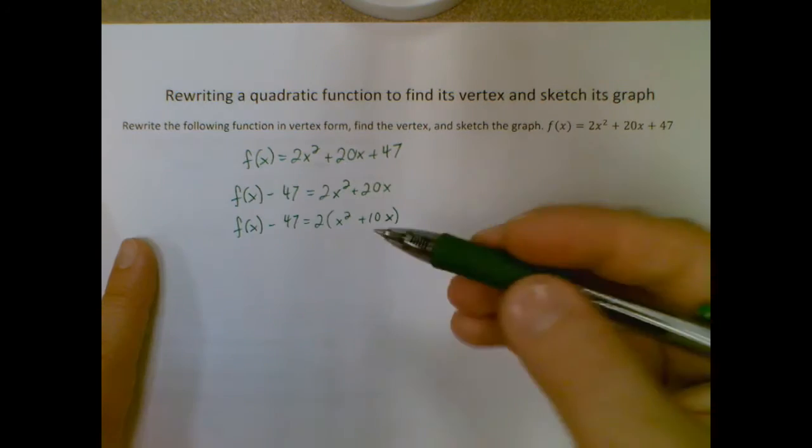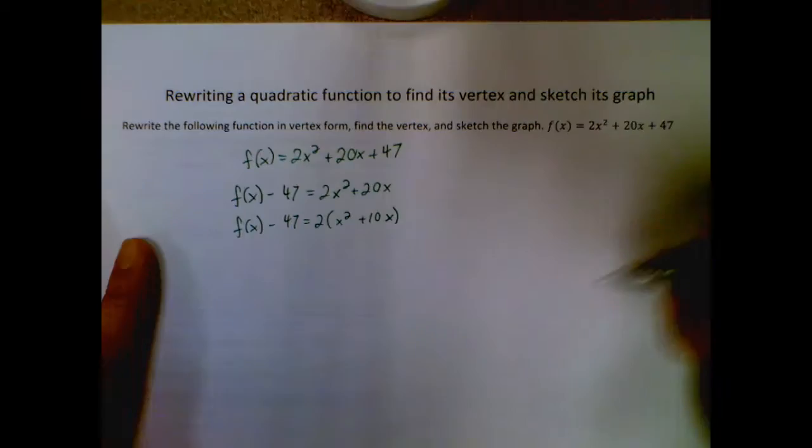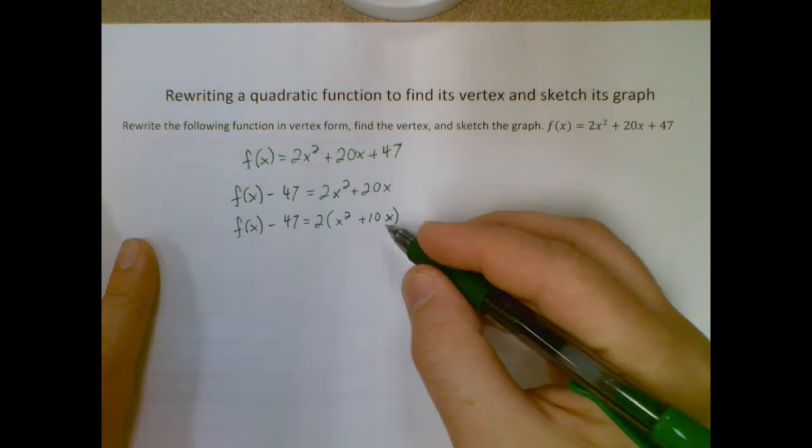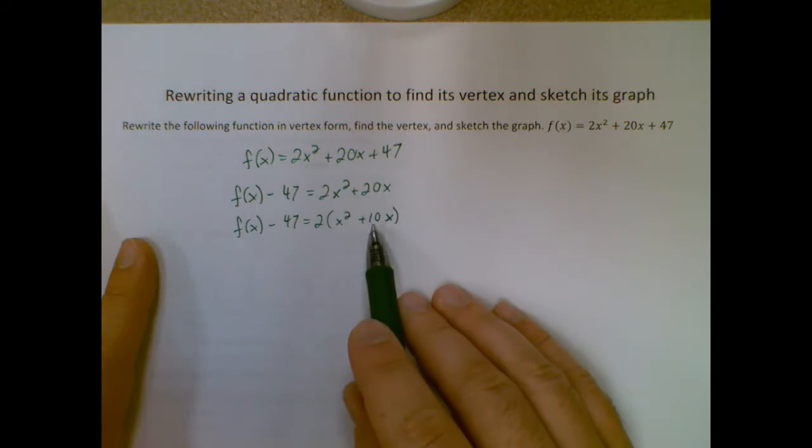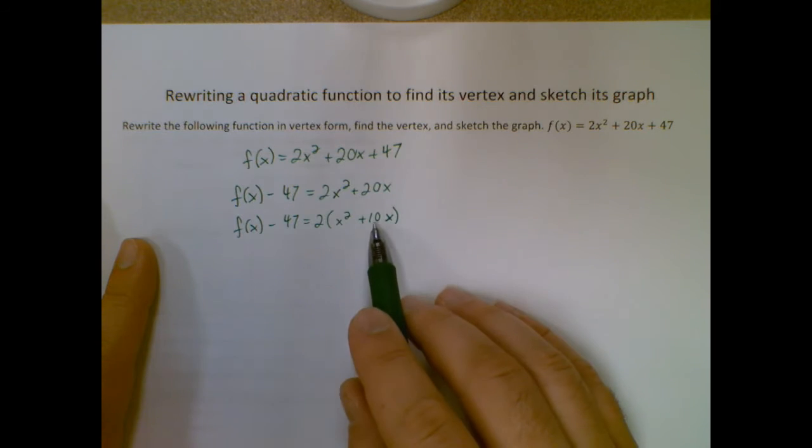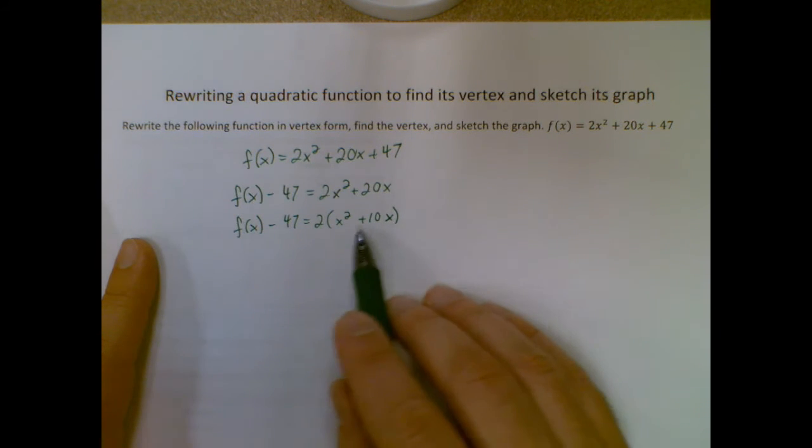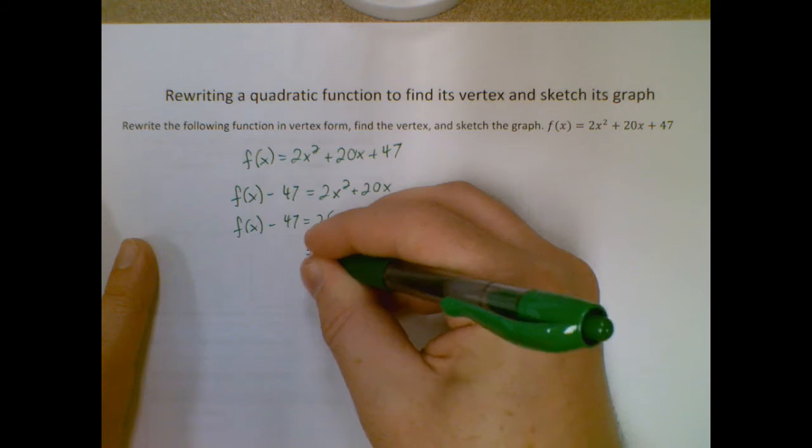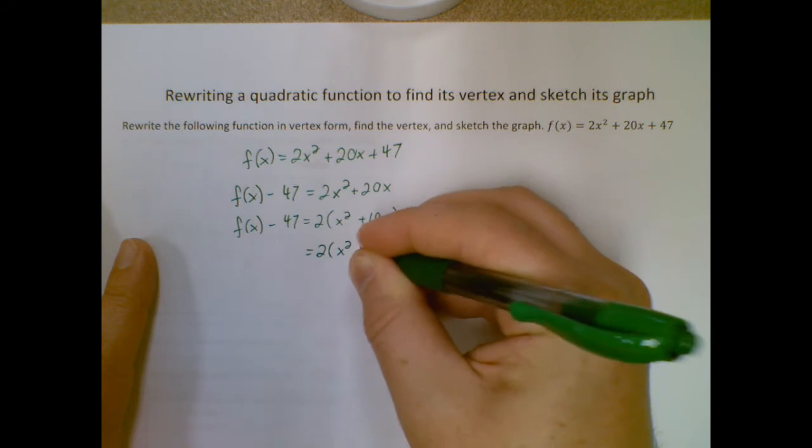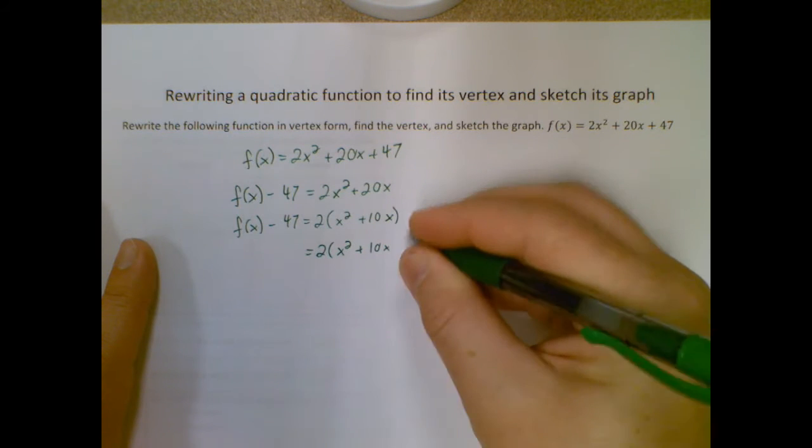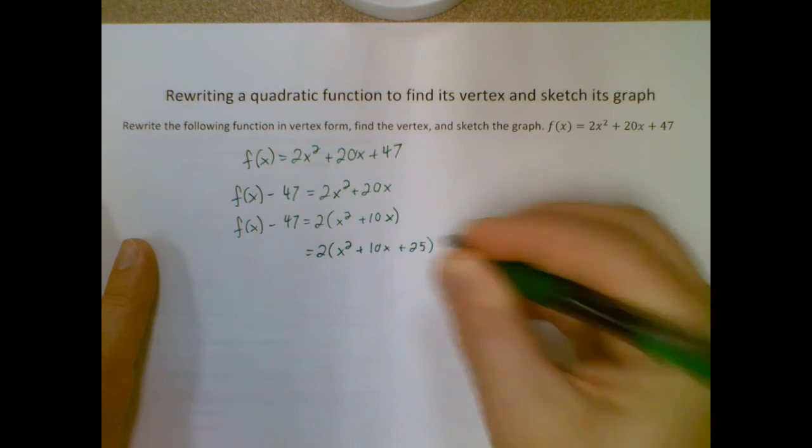Now I need to figure out what I'm adding in into this next step. To do that, I look at my new middle term after I factored it out. I'm going to divide it in half, then square it. I'm going to take 10 divided in half is 5, squared is 25. So I'm going to add 25 inside my parentheses, because that will turn my parenthetical part here into a perfect square trinomial.